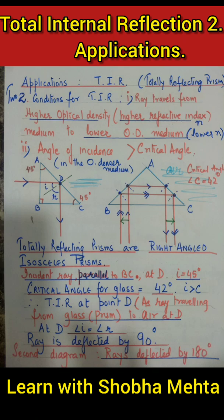These are right-angled isosceles prisms. Therefore, if a light ray is incident parallel to a base, its angle of incidence is 45 degrees, which is greater than the 42-degree critical angle for glass and air. So, rays are deflected by 90 degrees and also by 180 degrees, as shown in the diagram.